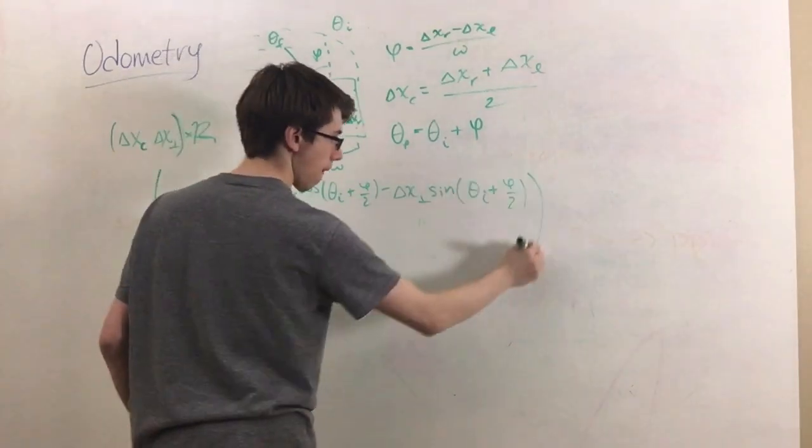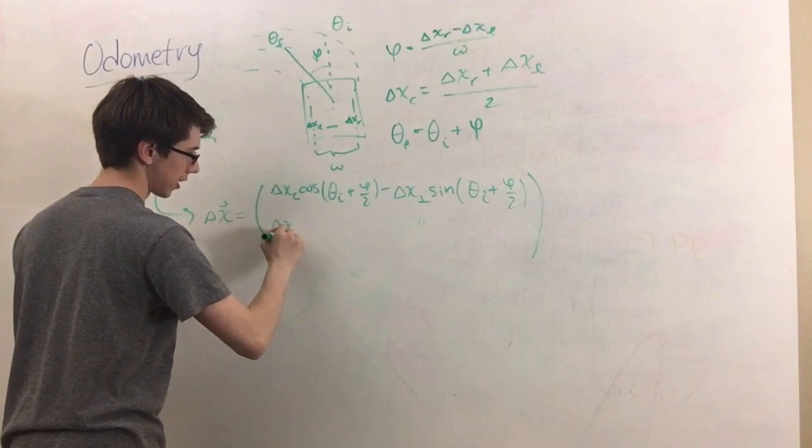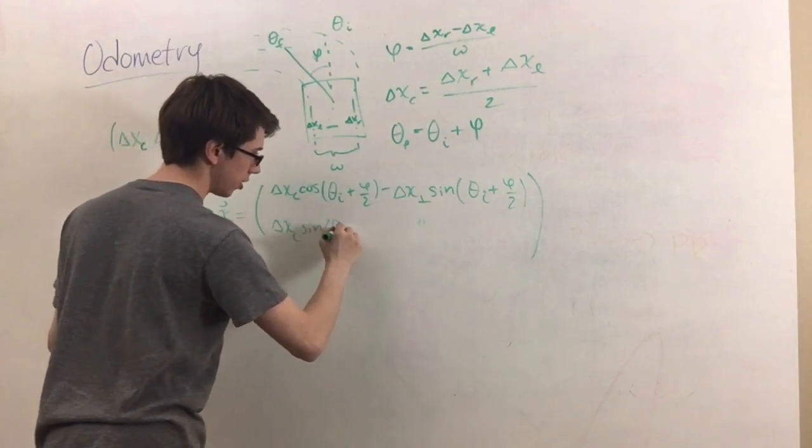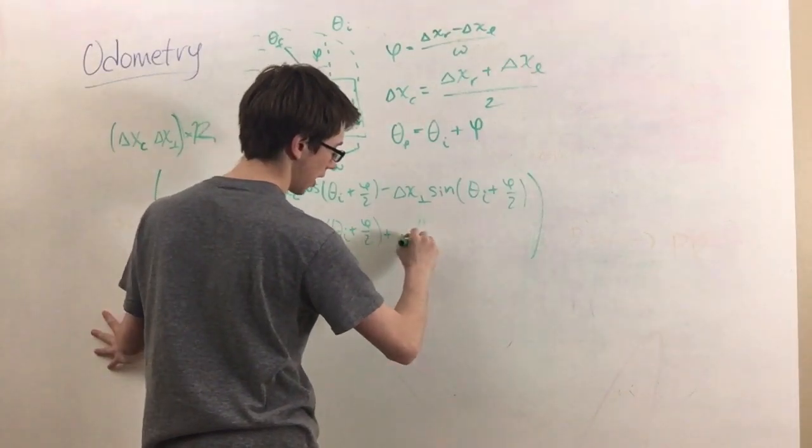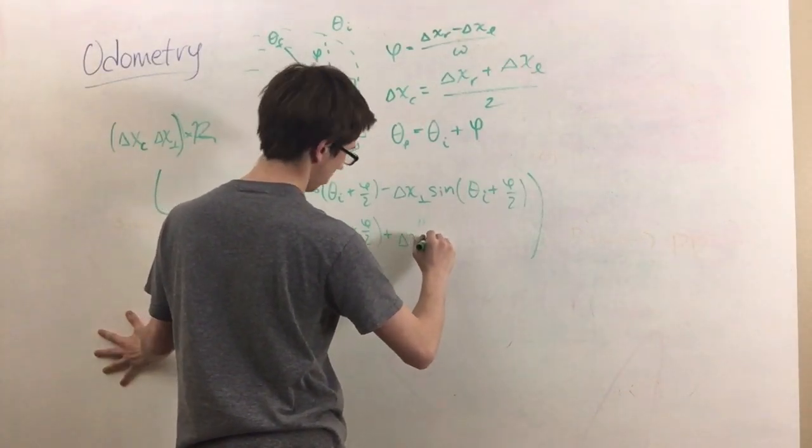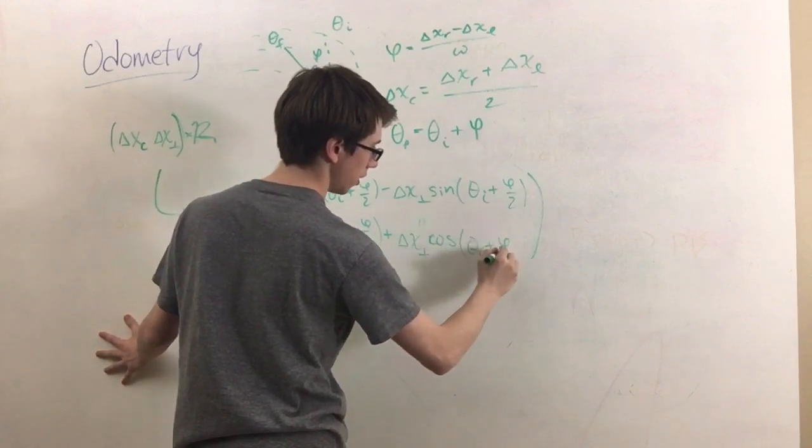And then our second would be delta x c sine of theta initial plus phi over 2, and then that's going to be plus delta x perp cosine of theta initial plus phi over 2.